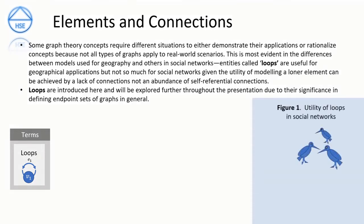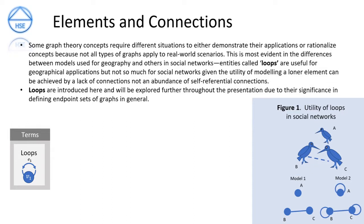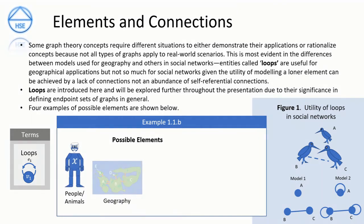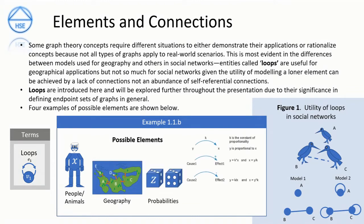Figure 1 shows the utility of loops in social networks. If we consider a network of three birds labeled A, B, and C, if there is a relationship between bird B and bird C, we can denote this by a line segment connecting two points B and C. This is shown in Models 1 and 2. The difference is an absence of self-referential connections in Model 1, whereas they appear in Model 2 — just to highlight that self-referential connections don't really value-add to depicting a social network. Four examples of possible elements are shown in Example 1.1.b: people or animals, geography, probabilities, and cause-and-effect relationships.